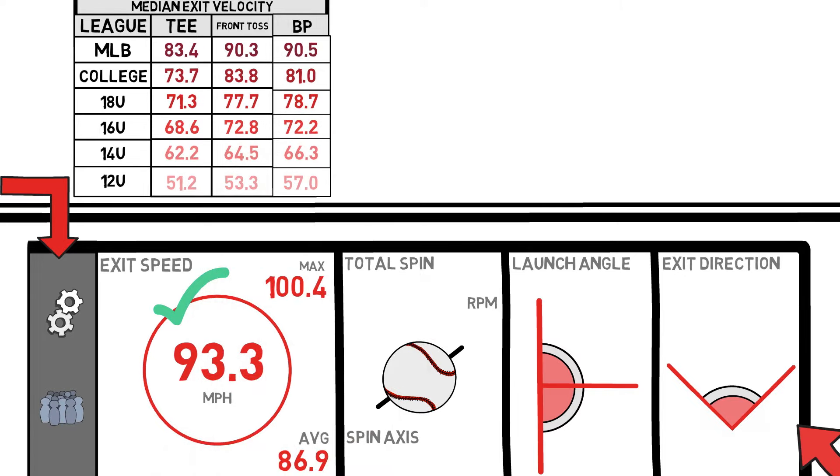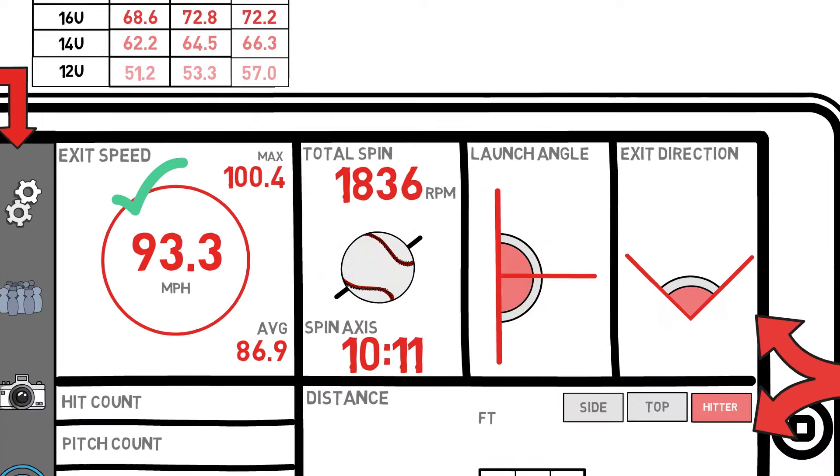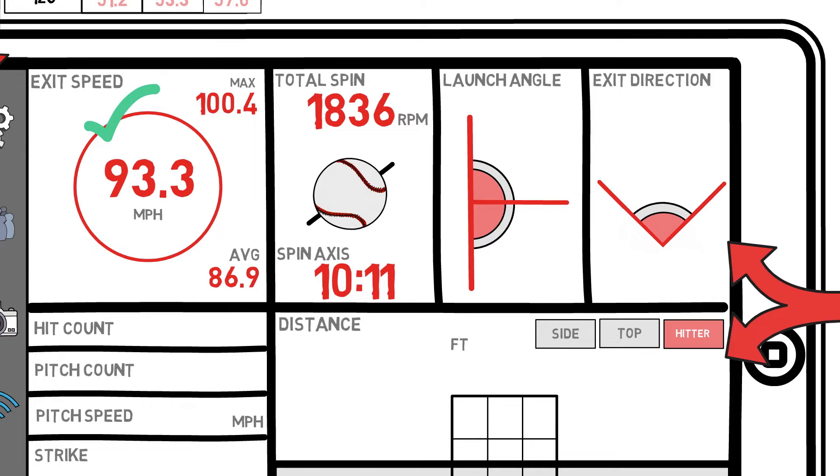Next we will hop into a not-so-straightforward tab, the spin informations tab. After each pitch, you will see two numbers pop up here, those being the total spin and the spin axis. First, we're going to tackle spin axis. This is the exact same measurement that we've talked about time and time again on this channel over on the pitching side, but it has a very different application.